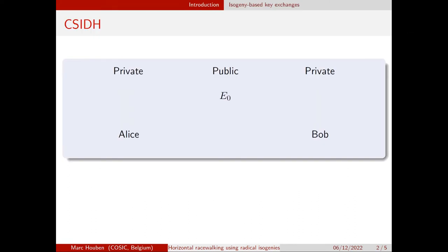One of these schemes that uses group actions is called CSIDH, which is a certain post-quantum key exchange protocol. We have a starting public elliptic curve E0, and Alice and Bob both have secret elements of a certain group that acts on elliptic curves.